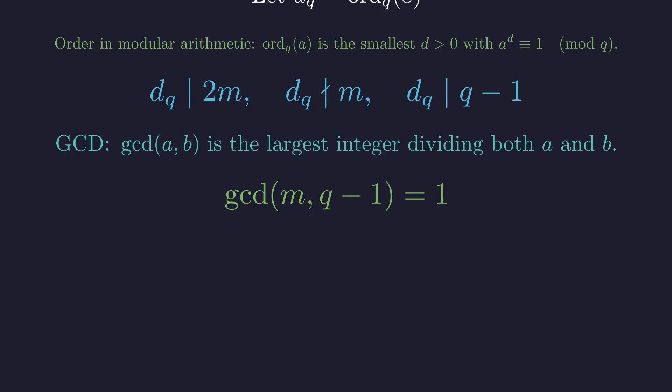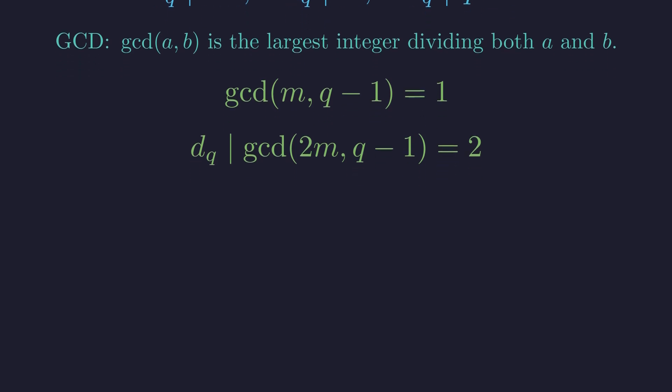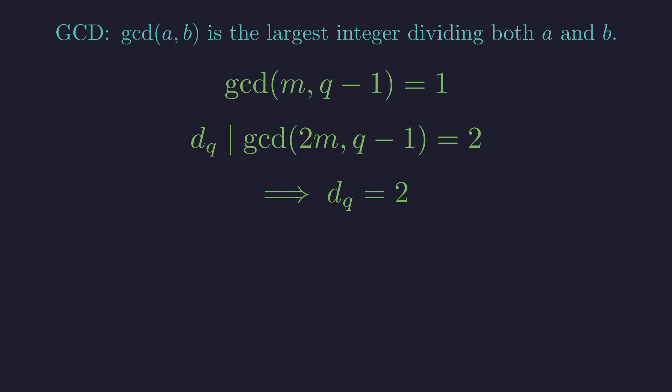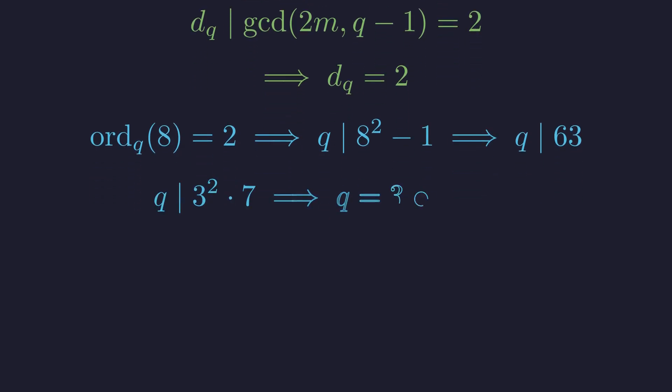Since q is the smallest prime factor of m, any prime factor of q minus 1 is smaller than q and therefore cannot be a factor of m. This means m and q minus 1 share no common prime factors. Their GCD is 1. This collapses the GCD of 2m and q minus 1 down to at most 2. So d sub q must divide 2. The only remaining possibility is that the order must be 2. An order of 2 means q divides 8 squared minus 1, which is 63. The prime factors of 63 are 3 and 7, so q must be 3 or 7.